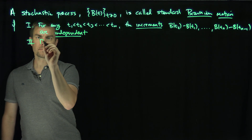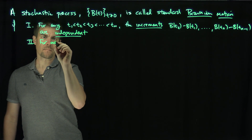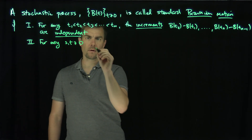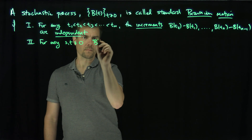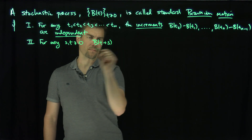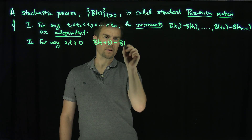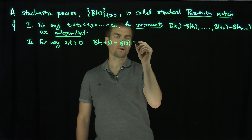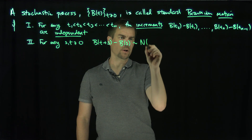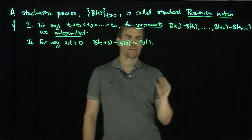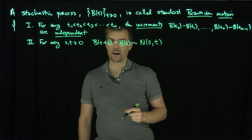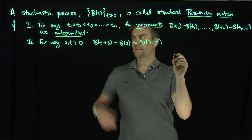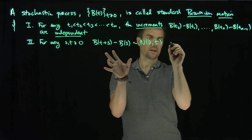For any s and t greater than or equal to zero, b(t plus s) minus b(s) — this increment — is normally distributed with mean zero and variance t. That's the variance. This is the property of stationary increments.